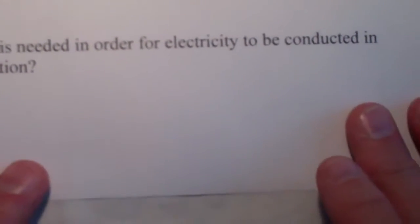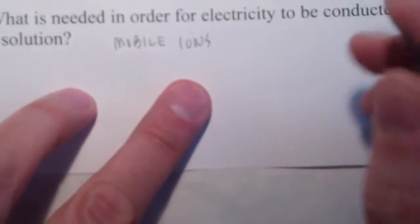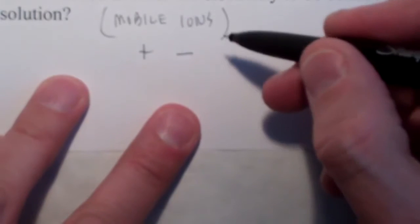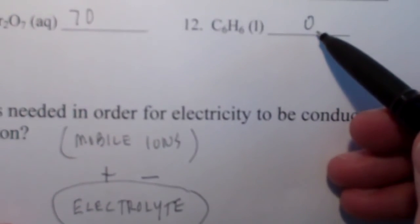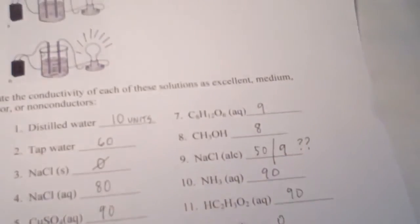So what is needed in order for electricity to be conducted in a solution? The answer is mobile ions — we must have positive and negative ions that can move back and forth between the electrodes. If mobile ions are present, we have what's called an electrolyte. Substances with higher conductivity are electrolytes; those with very low conductivity are poor electrolytes; and those with zero conductivity are non-electrolytes. An electrolyte is something that, when dissolved in water, can conduct an electric current. I hope you enjoyed the demo!